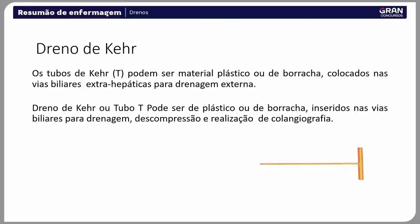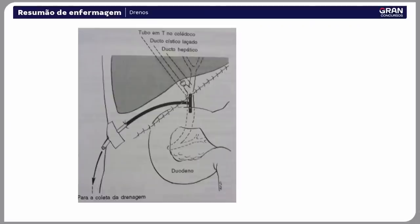O dreno de Kehr — também chamado de tubo T — é mais comum em unidade de cirurgia hepática. São tubos em forma de T, de material plástico ou borracha, colocados nas vias biliares extra-hepáticas para drenagem externa. O dreno de Kehr pode ser de plástico ou borracha, inserido nas vias biliares para drenagem, descompressão e realização de colangiografia. O dreno pode não apresentar secreção no pós-operatório por obstrução; nesse caso, ordenhá-lo para tentar desobstruir o coágulo ou, se não conseguir, retirá-lo.